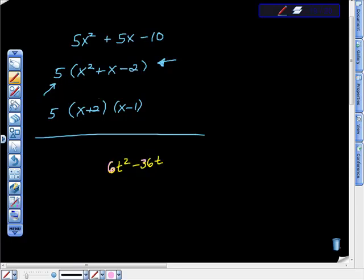And I see a 6 here, and I see 36 here, and they have something in common. They have a factor of 6 in common, so I'm going to start by just factoring out that 6. All right, and I'm going to put all the other stuff back in here in a minute.